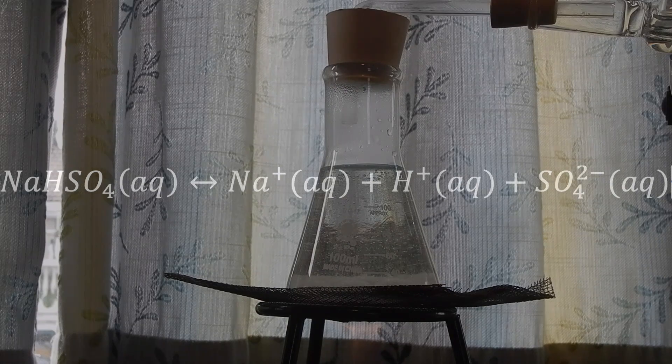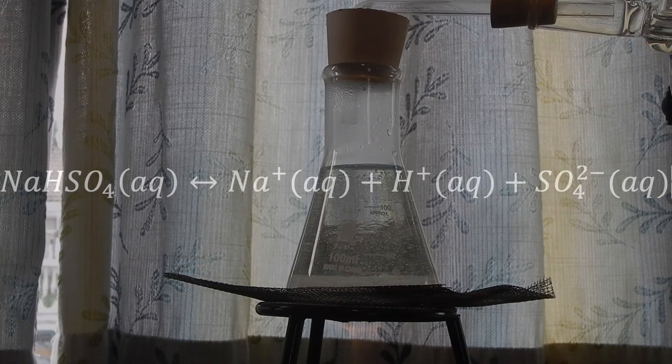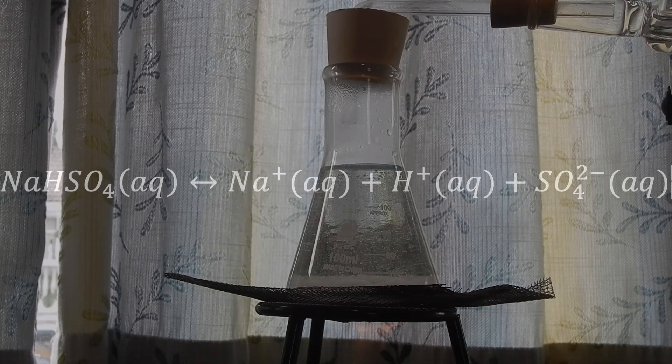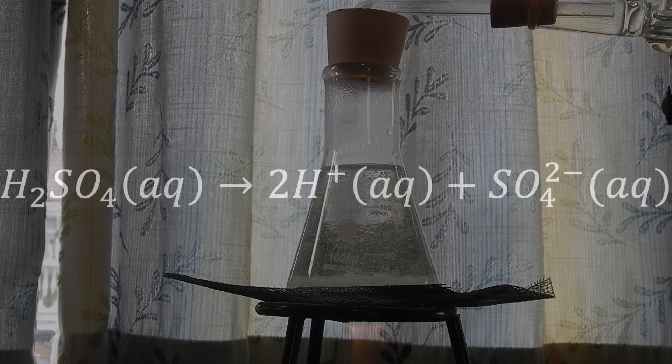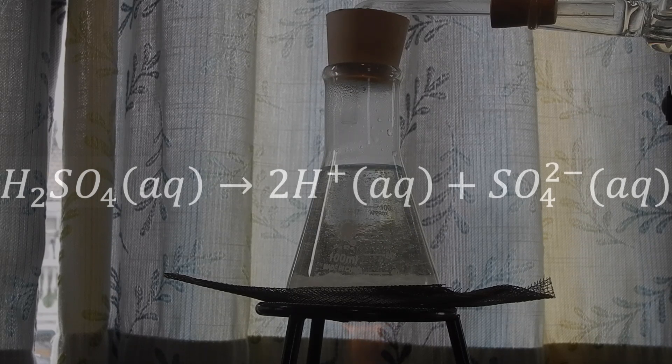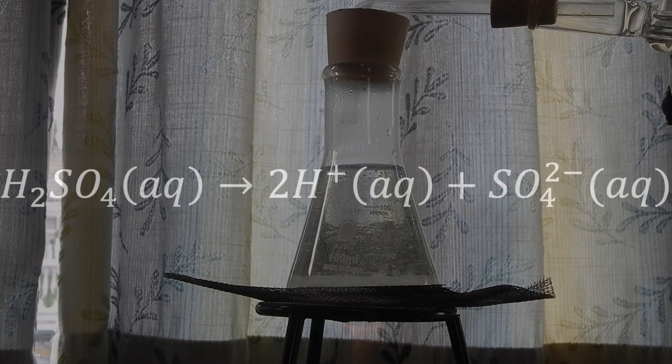The main difference between the two is that the hydrogen in the bisulfate does not completely dissociate, while the two hydrogen in the sulfuric acid dissociates completely. This explains the difference in acidity.